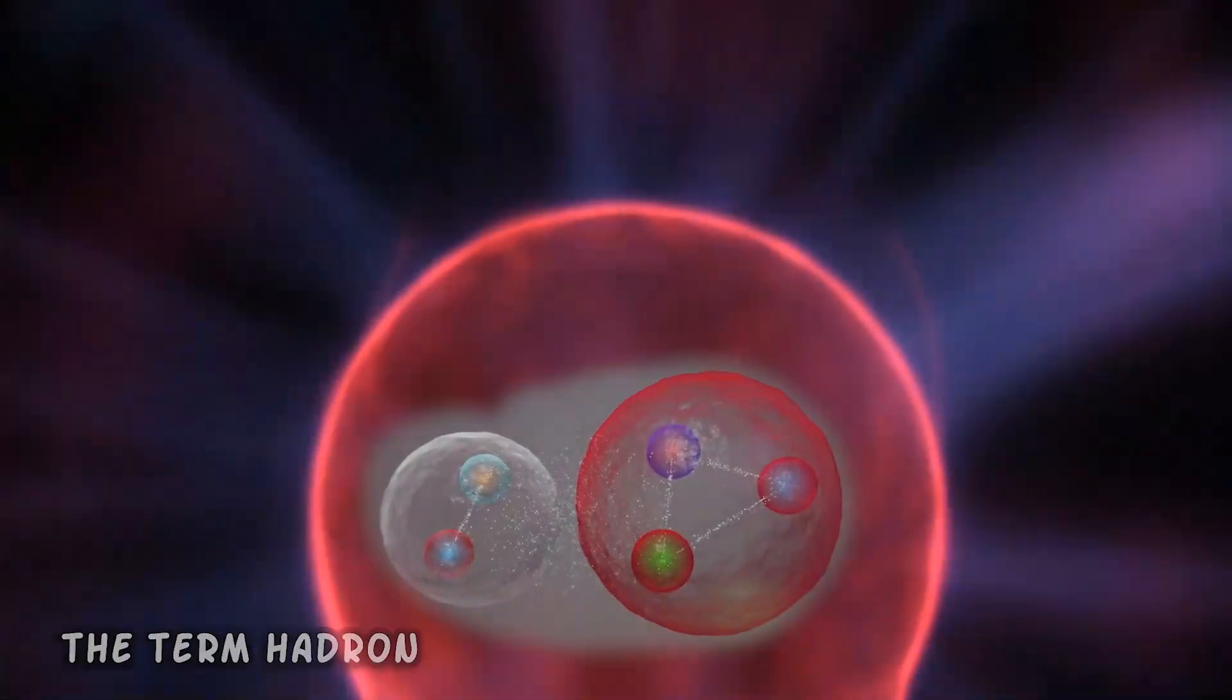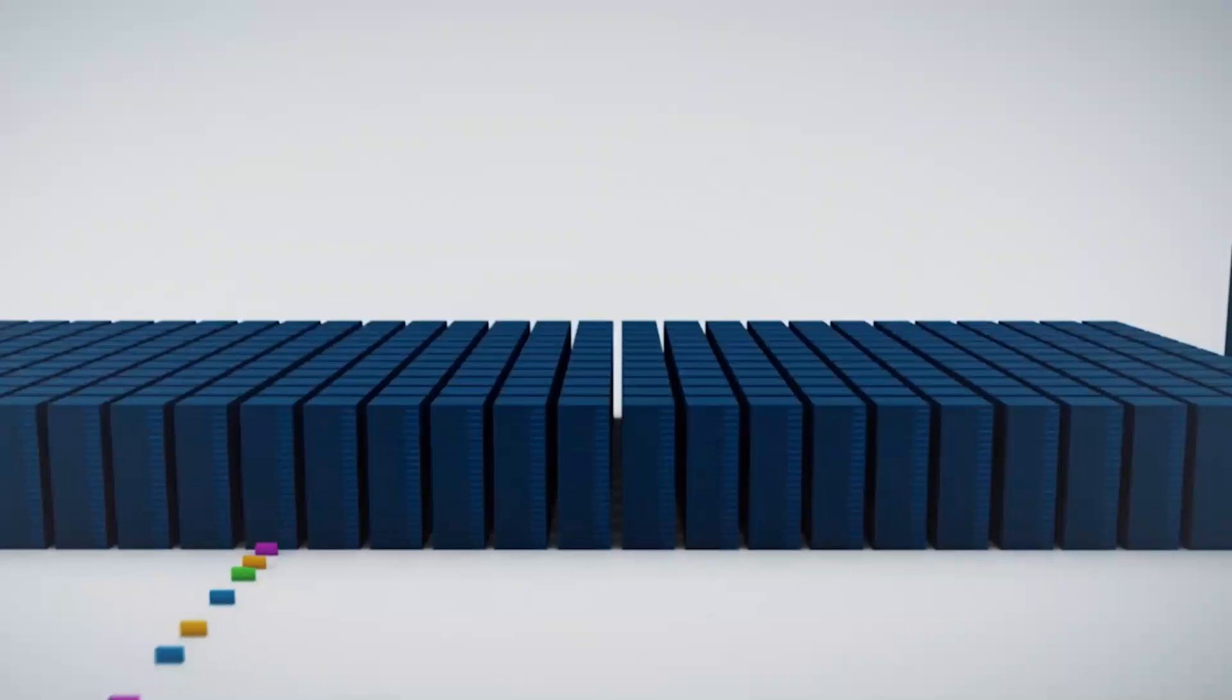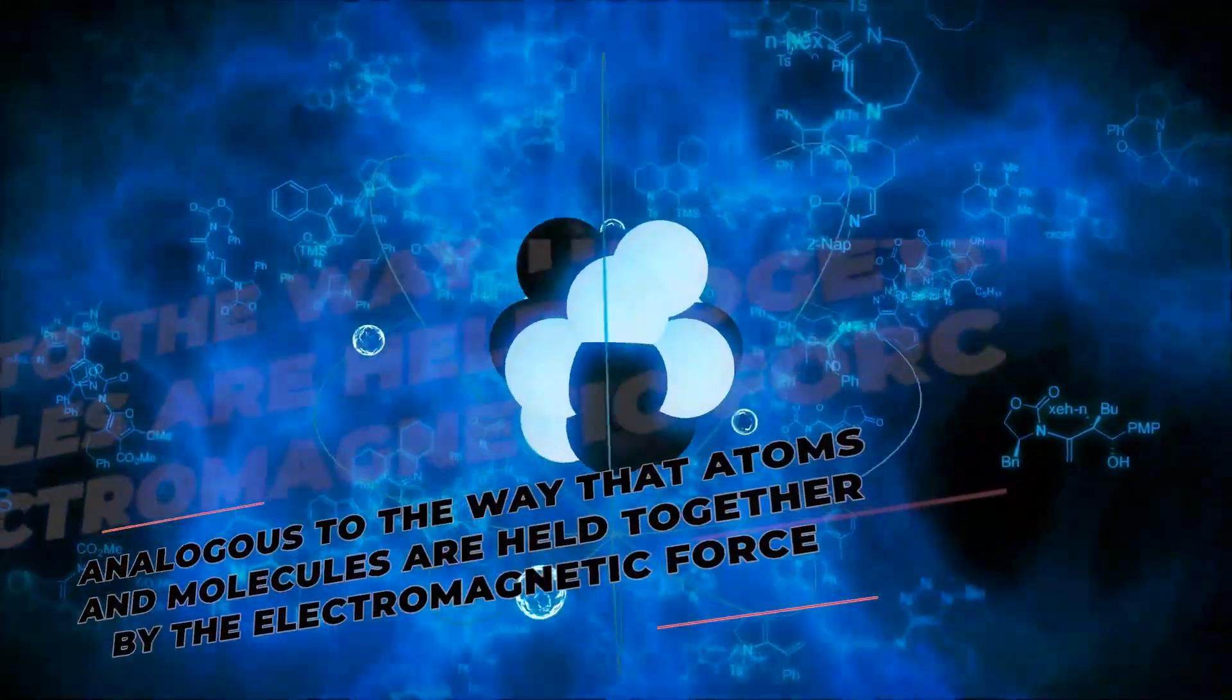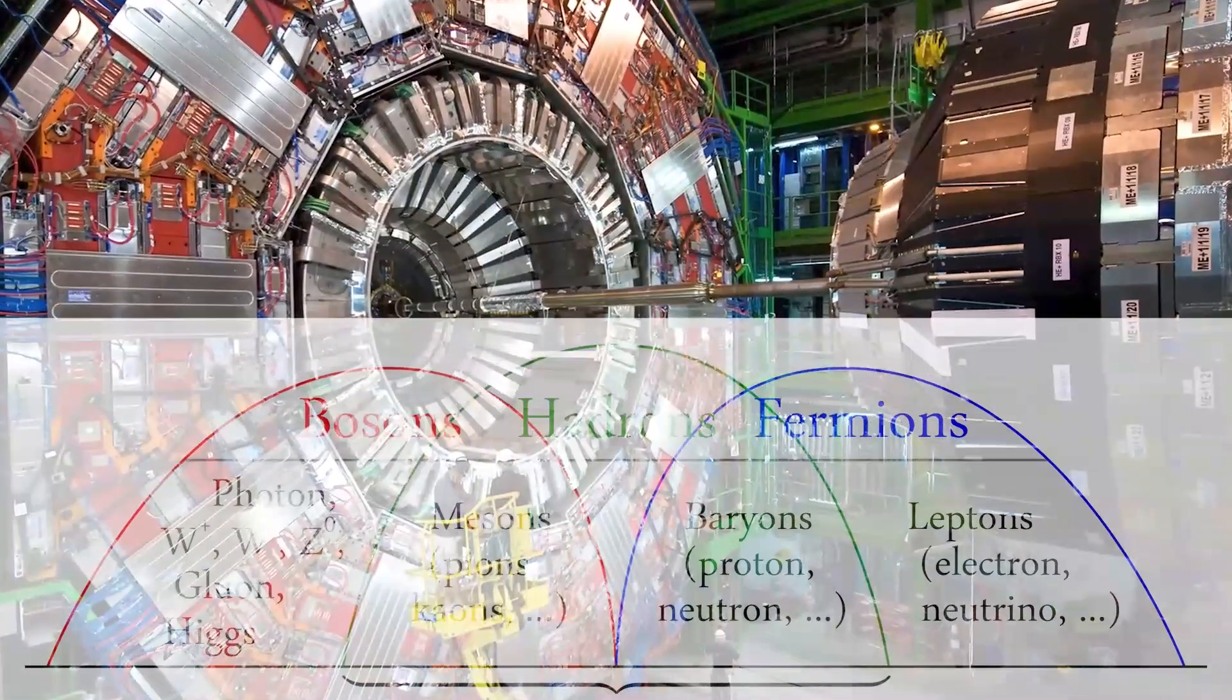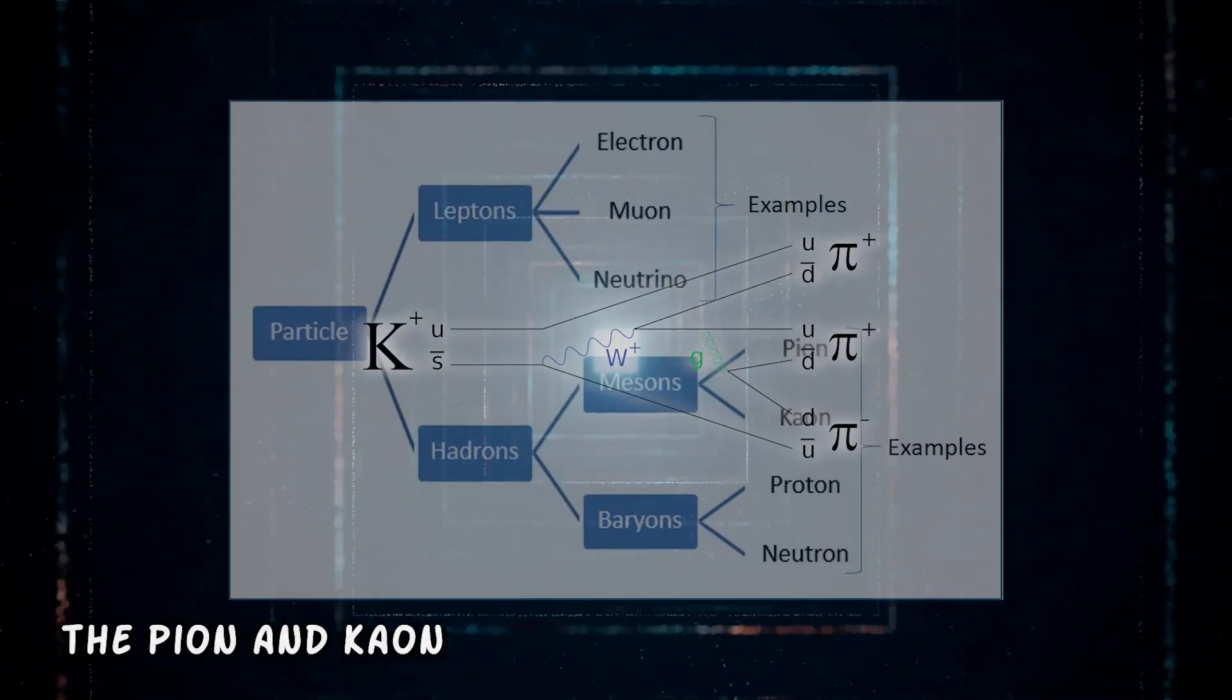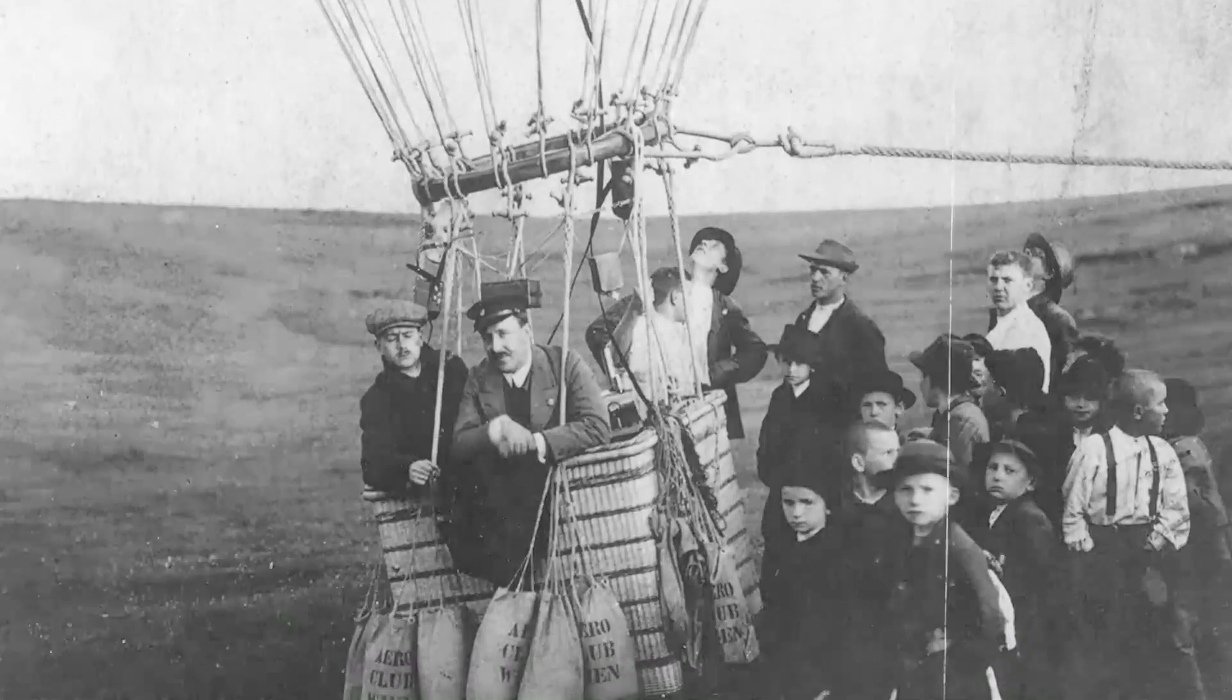The term hadron refers to subatomic composite particles composed of quarks held together by the strong force, analogous to the way that atoms and molecules are held together by the electromagnetic force. The best-known hadrons are the baryons, such as protons and neutrons. Hadrons also include mesons, such as the pion and kaon, which were discovered during cosmic ray experiments in the late 1940s and early 1950s.